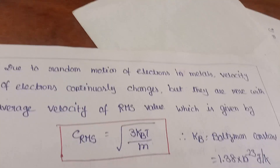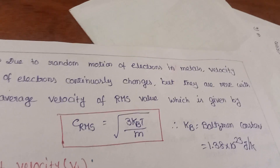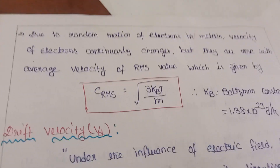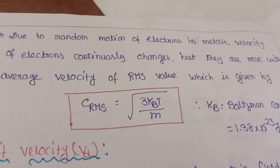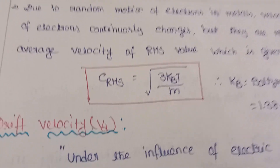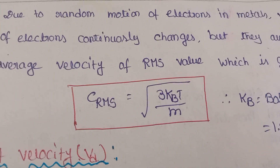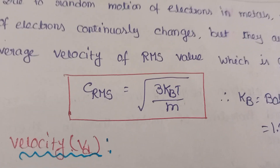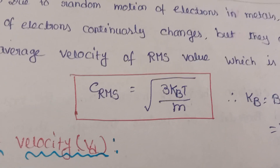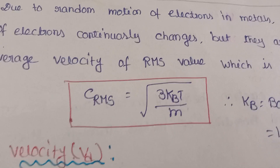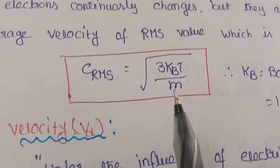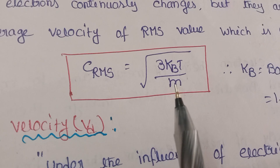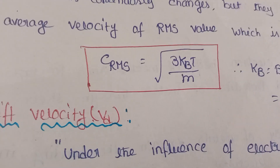Due to the random motion of electrons in the metal, the velocity of the electrons continuously changes, but they move with an average RMS velocity. It obeys the classical kinetic theory of gases. The RMS velocity is equal to the square root of 3k_BT divided by m.